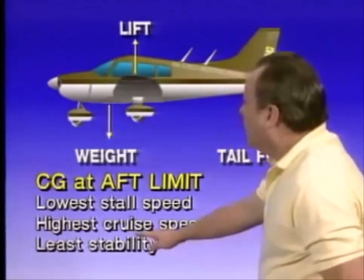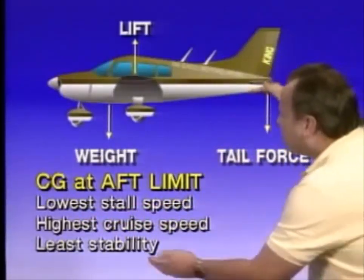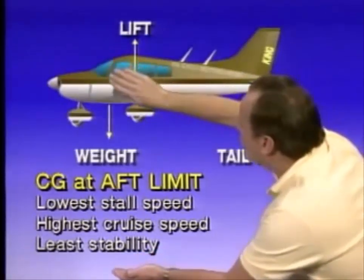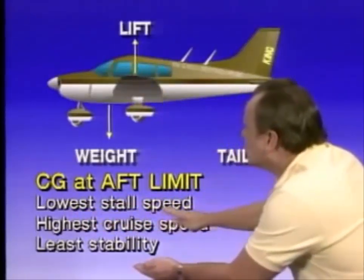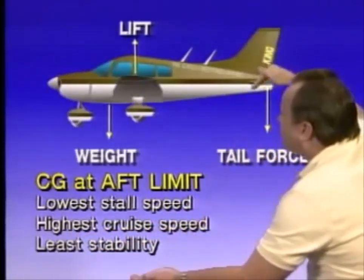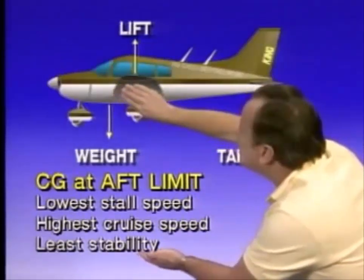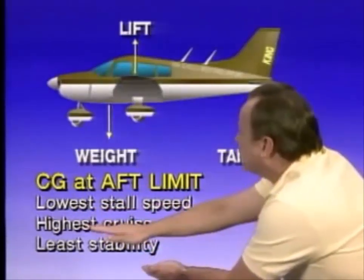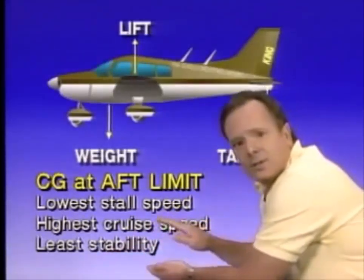But what's going to happen to the stalling speed? It'll have a lower stalling speed, because if there's less down force on the tail the wings have to support less weight. When you move the CG rearward you lower the stalling speed, and you also have a higher cruise speed because the down force on the tail and the lift required to support it cause drag. So moving the CG rearward means the plane cruises at a higher speed, but the trade-off is it's less stable.